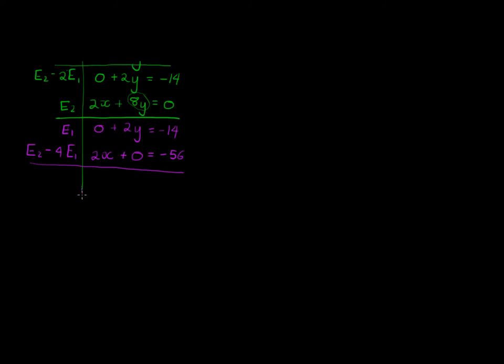And finally I see, oh, I've got this diagonal, but it's diagonal upward. So I'm just going to swap equation 1 with equation 2. I'm allowed to swap equations as well. So I have 2x plus 0 is equal to negative 56, and 0 plus 2y is equal to negative 14.